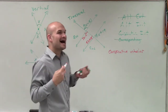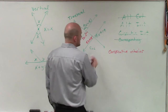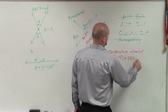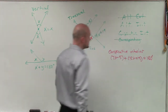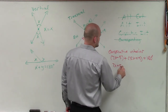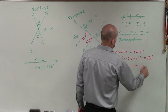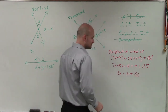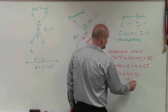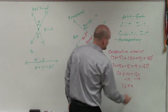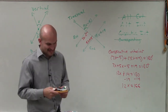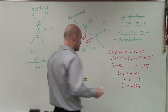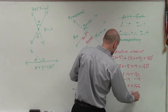Since they're consecutive interior angles, we need to remember how consecutive interior angles relate to each other: consecutive interior angles are supplementary. So I can write that 7x minus 5 plus 5x plus 19 equals 180 degrees. Combining like terms gives 12x minus 14 equals 180. Adding 14 to both sides: 12x equals 194 — wait, subtracting: 12x equals 166. Dividing by 12 gives x equals approximately 13.83.